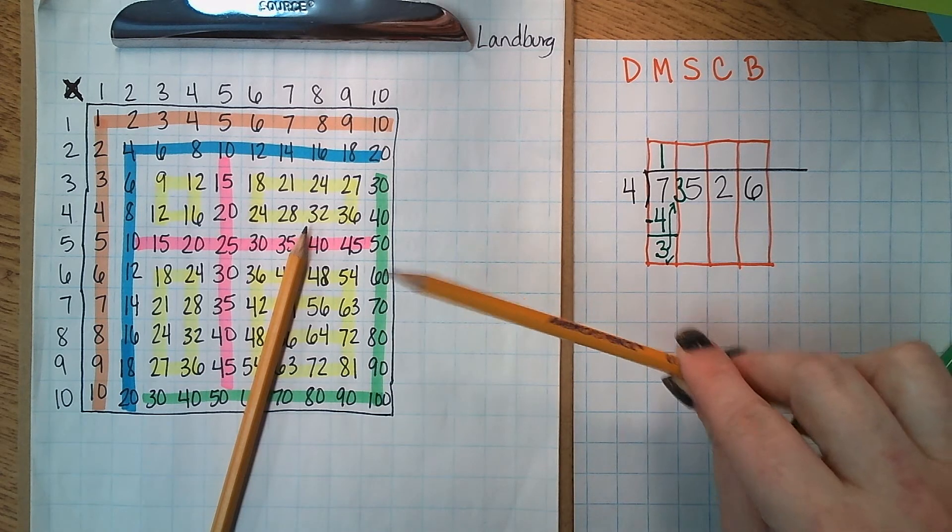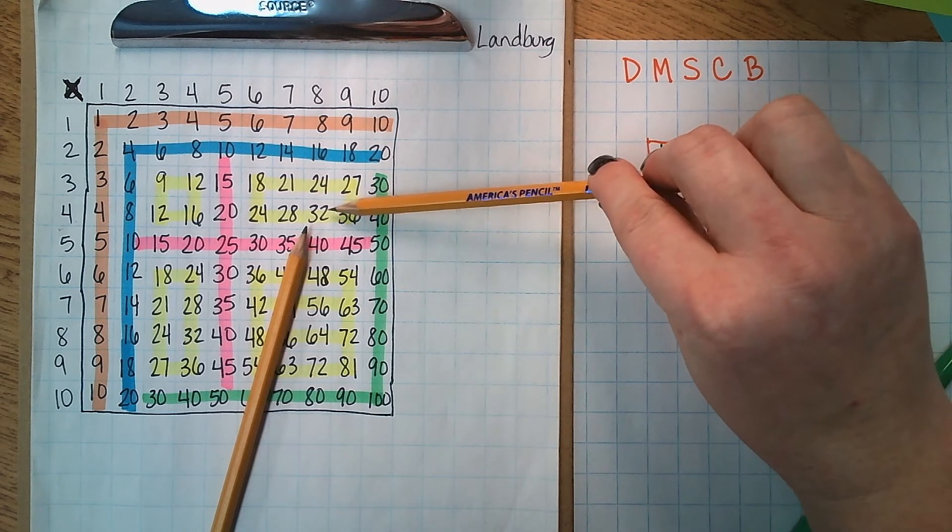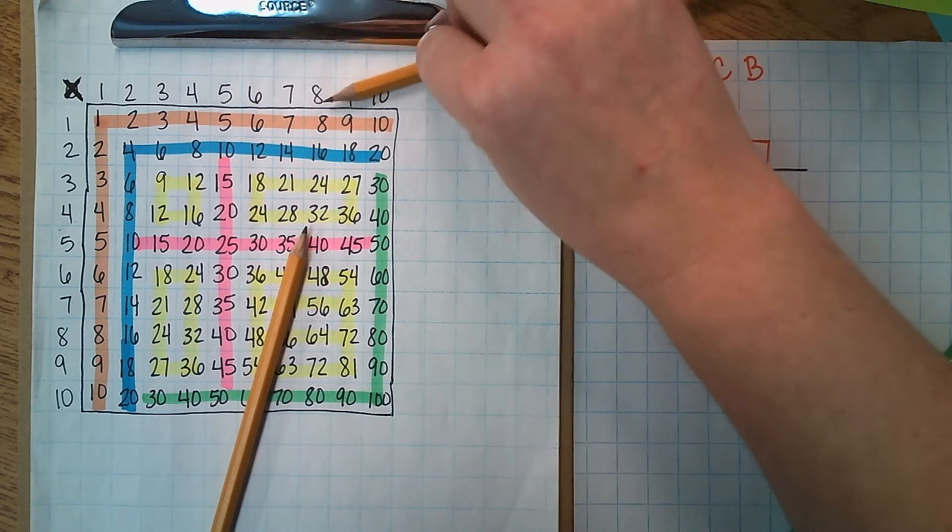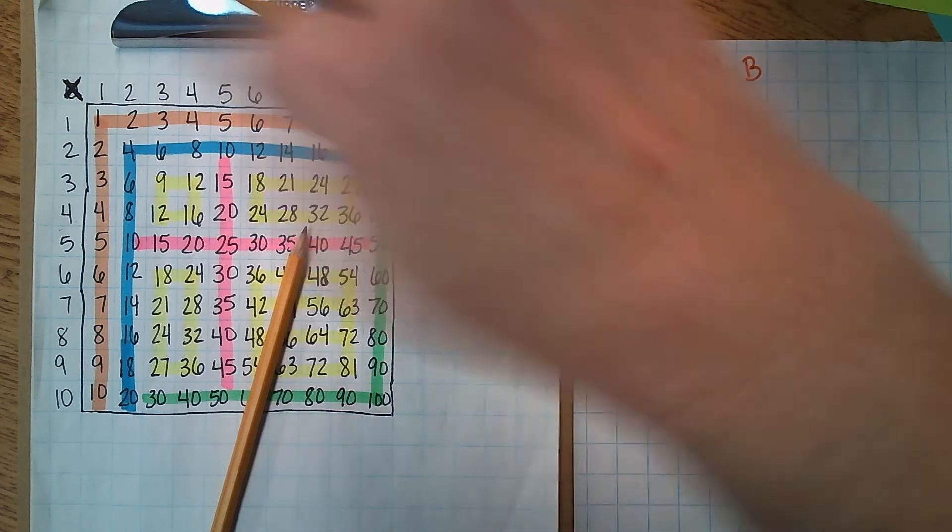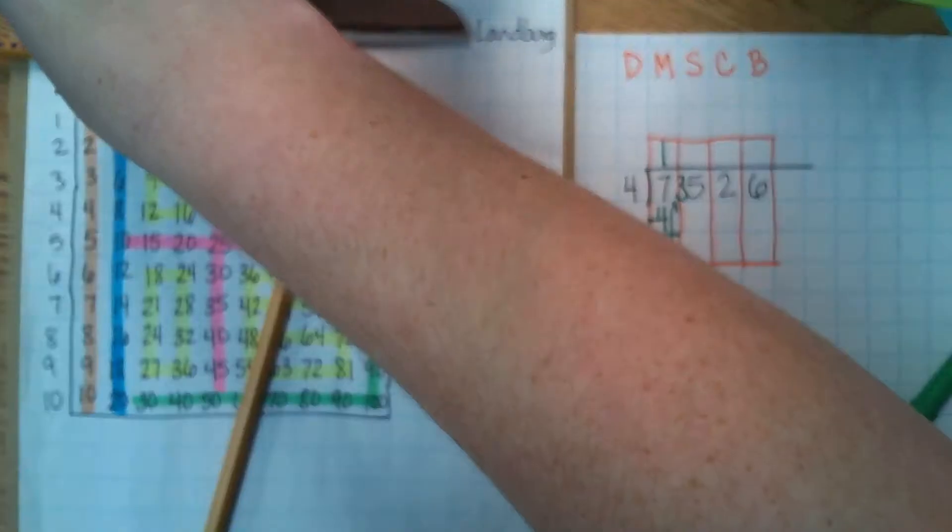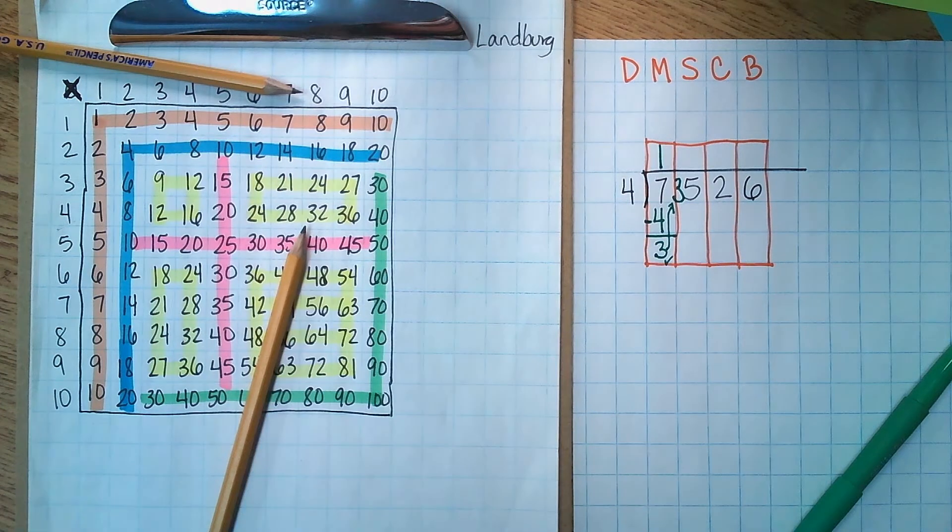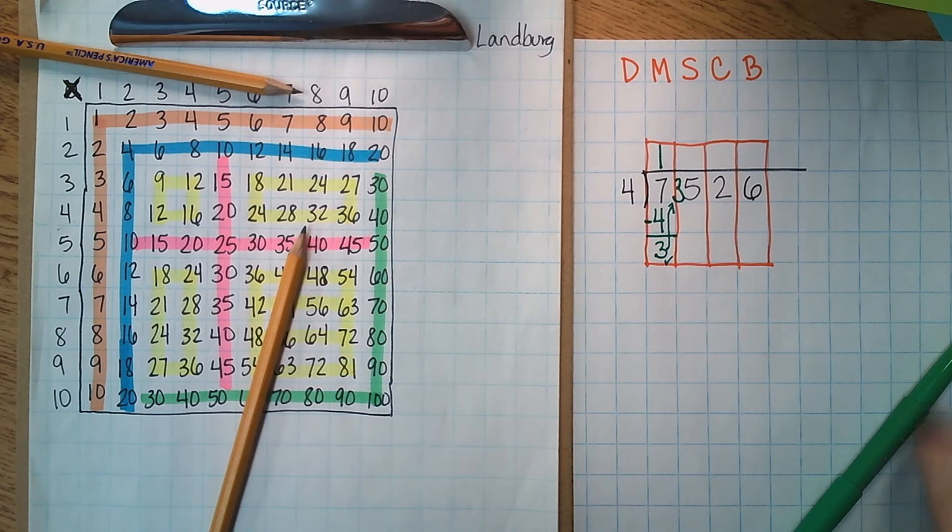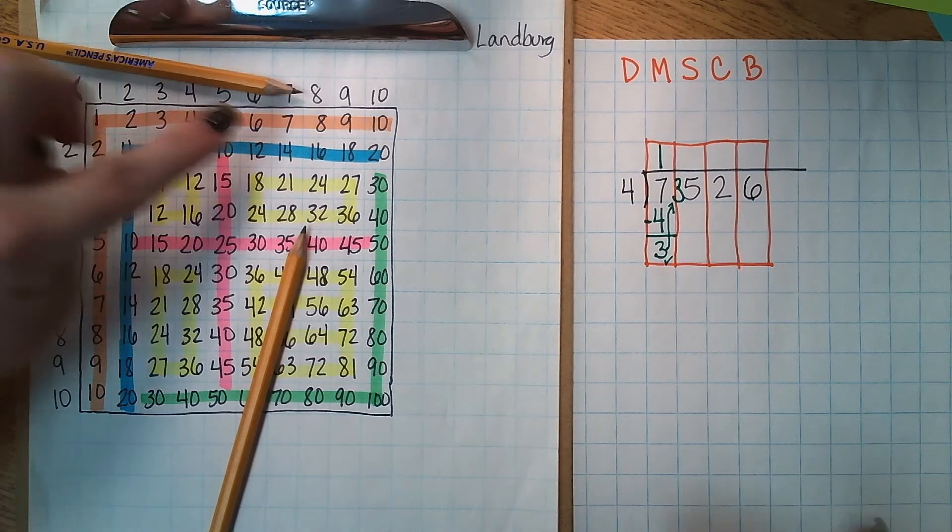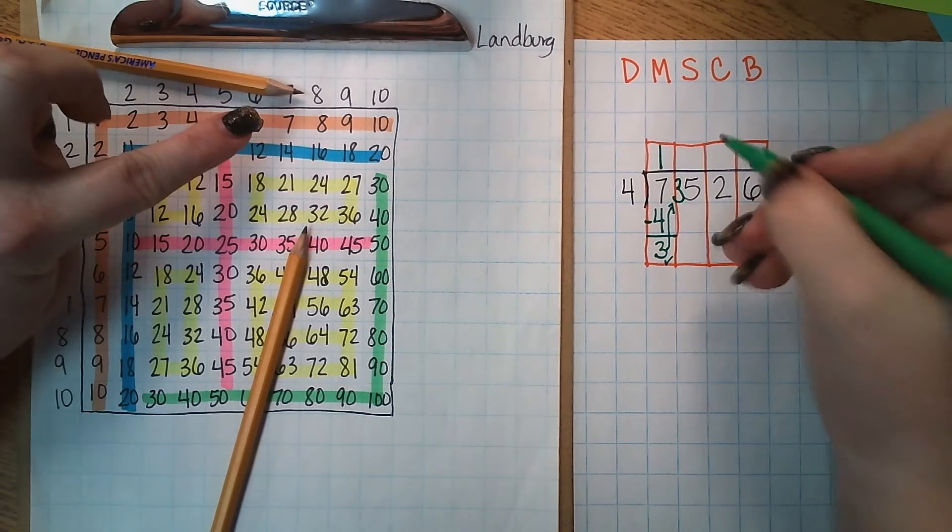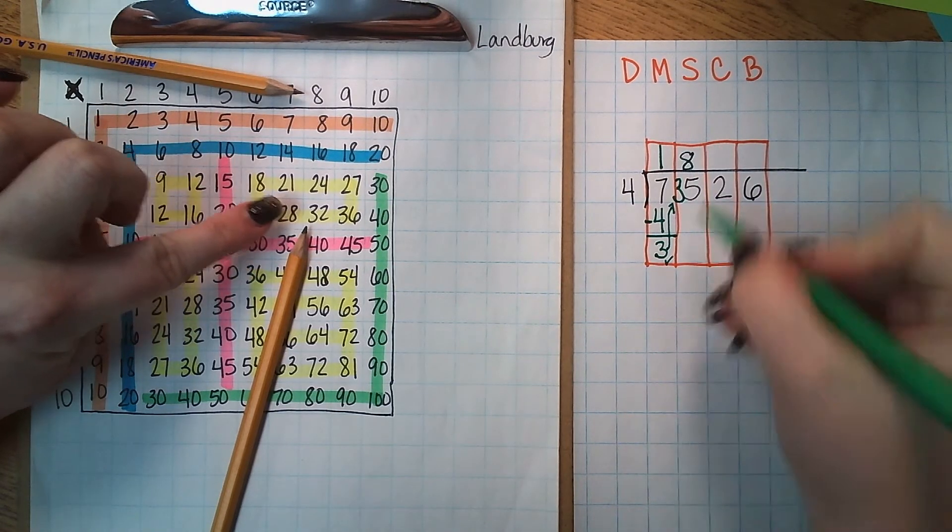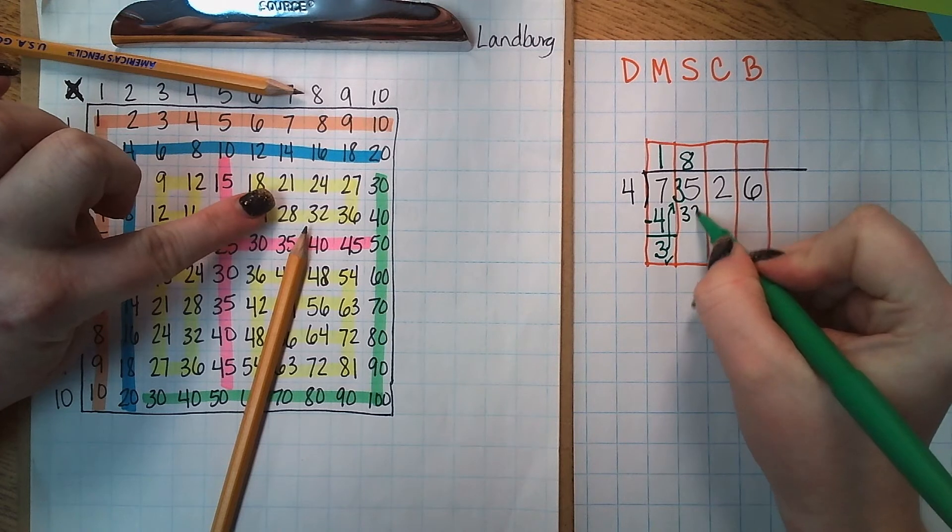Then I'm going to take my second pencil. I'm going to start it at 32 and I'm going to go up here and point it at eight because that's the number that is directly on top of 32. So again the top pencil tells me the number that goes on top.